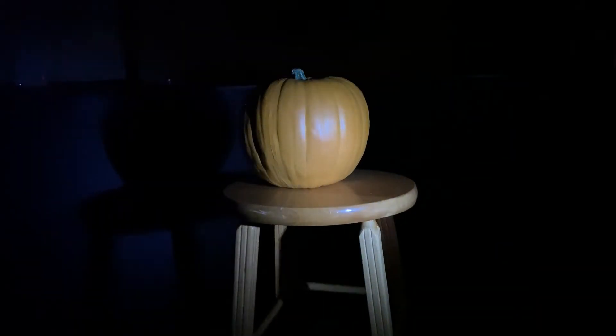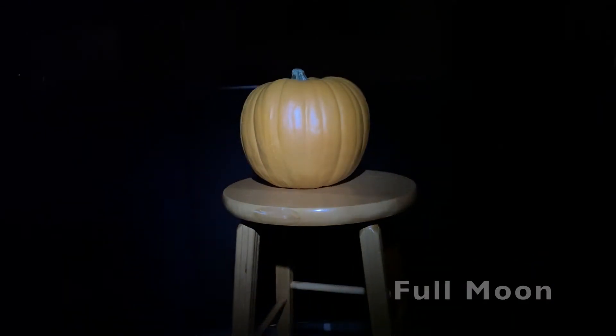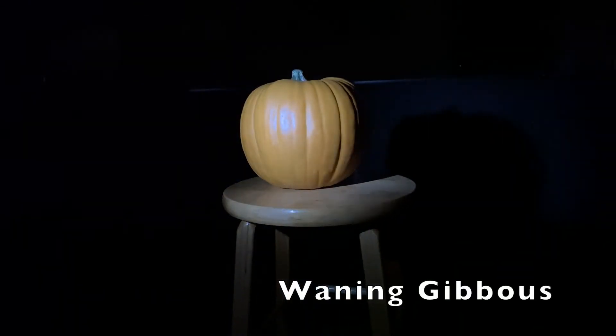Full moon: the moon is completely circular. Waning gibbous: the moon is losing weight, the right half of the moon is darkened.